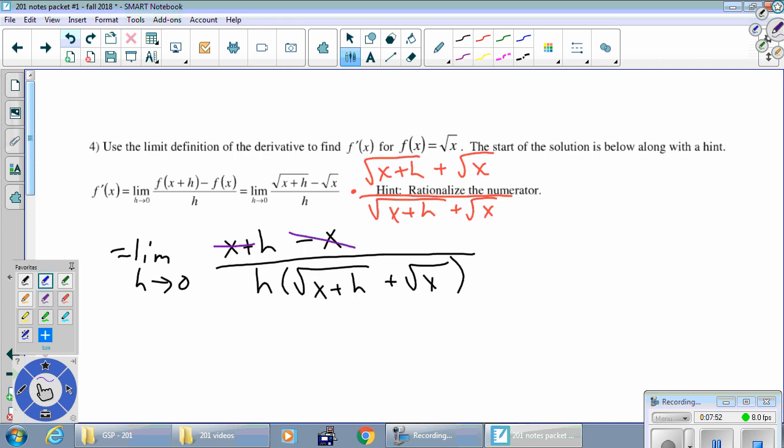And then I'm going to be super lazy and just cancel those h's right now. I can cancel h on the top, h on the bottom. I do need a placeholder on top now. It's a one. So we're just going to put this one last time with the limit in the front, and then we don't have to write it anymore. One over root x plus h plus root x.